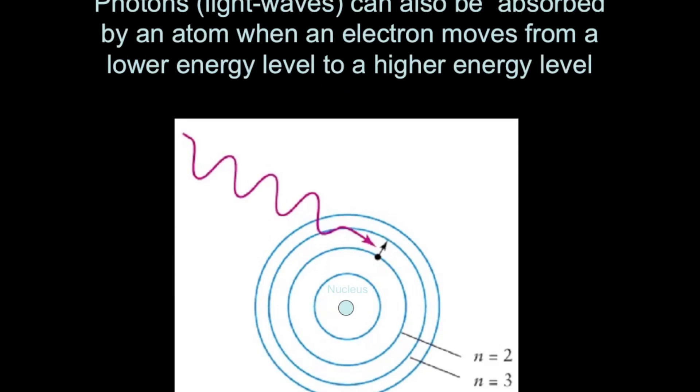The opposite process is called absorption. When an electron goes from a lower level to a higher level, say going from two up to three in terms of orbit levels, then it has to gain energy. And the only way for it to gain energy in these scenarios is for a photon of light to transfer its energy to the electron, and thus the electron absorbs that energy and is able to move up to a new level.